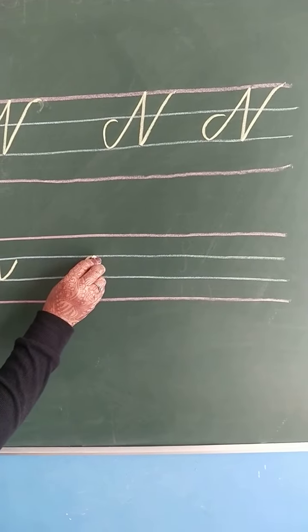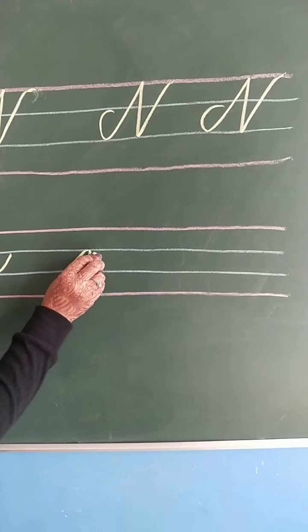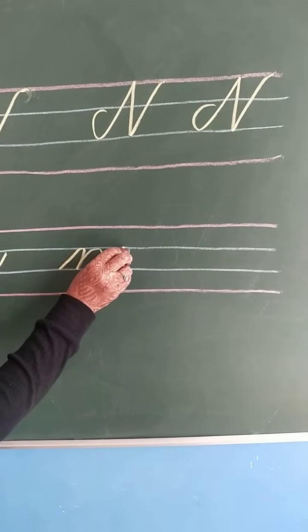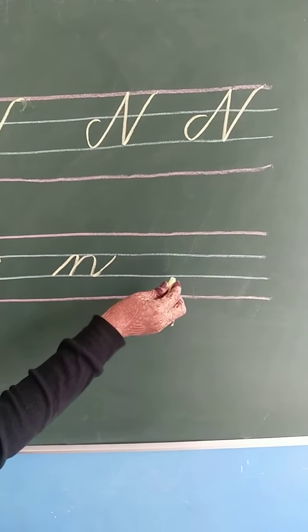Slant line, make a curve, come down. One more curve, one more curve, and here you have to touch the second line.